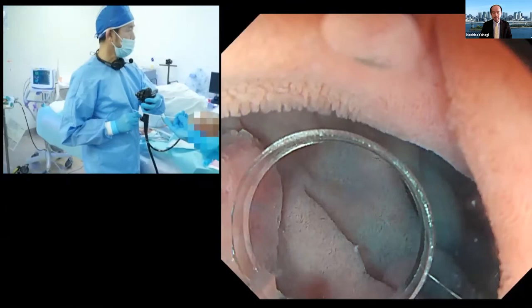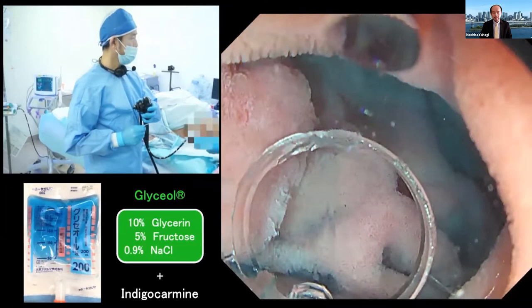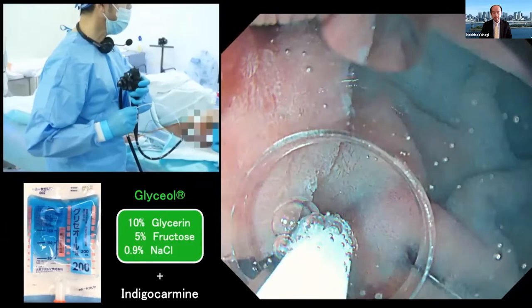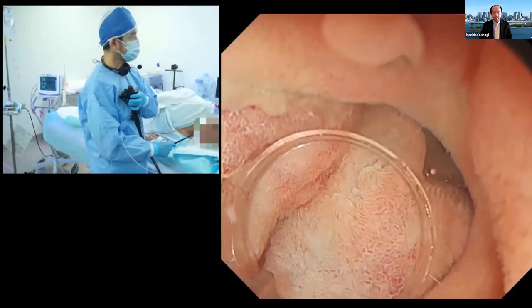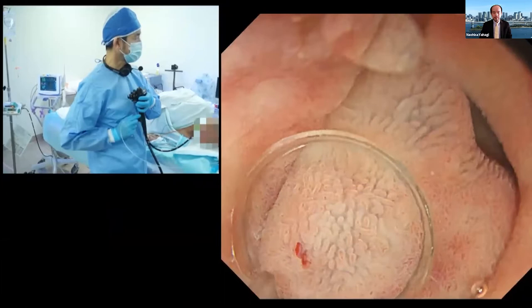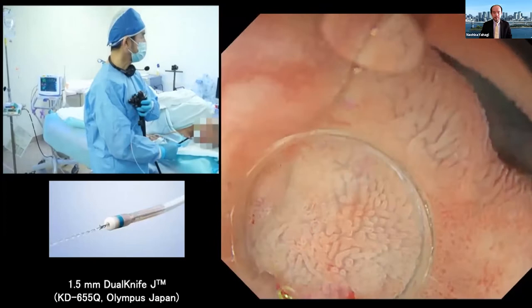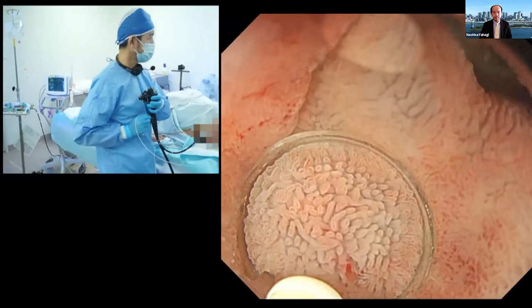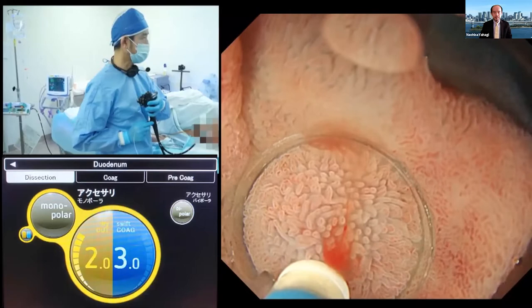Before starting the actual procedure, we should immerse the lumen with normal saline to utilize the power of water pressure. I will use pre-cell solution together with a small amount of indigo carmine, which is useful to visualize the submucosal layer. I puncture the mucosa carefully, inject, and gently pull back the needle to make a nice protrusion. The inner side of this lesion is well lifted with the submucosal injection. I always use the 1.5 mm dual knife J, and carefully check the border of the target region before starting the mucosal incision. I prefer to use dry cut effect 2 with effect 3.